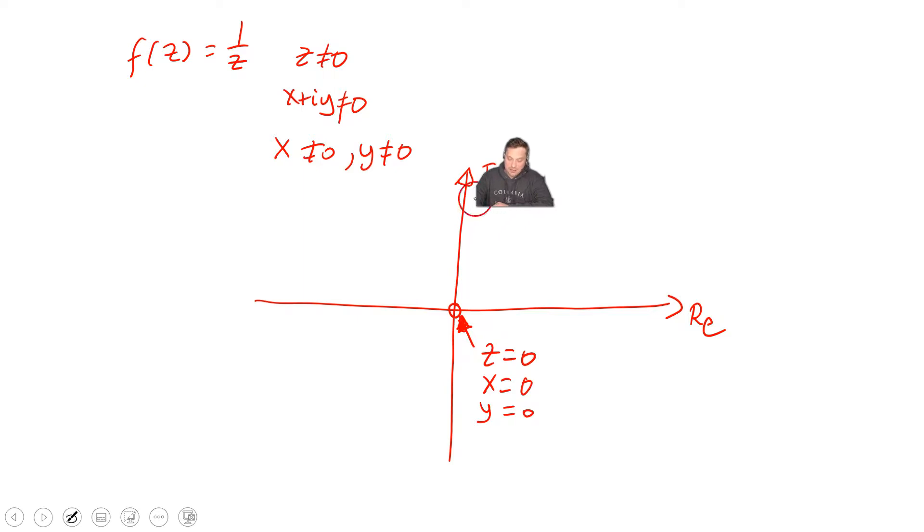So you can plug in, for example, any point from here, no problem. What I mean by that is, for example, you could do f(1 + i). You can plug that into the function. You would get 1/(1 + i). That's a perfectly defined quantity, no problem.